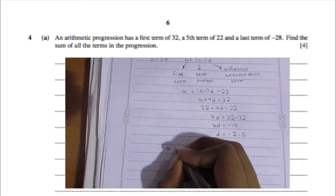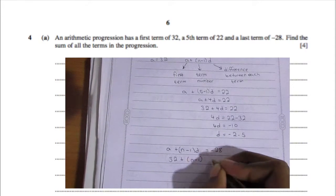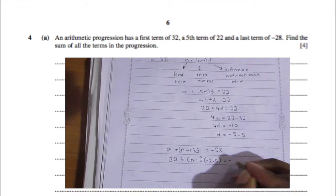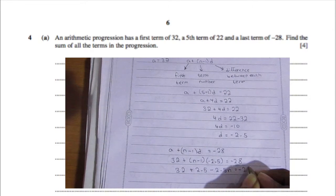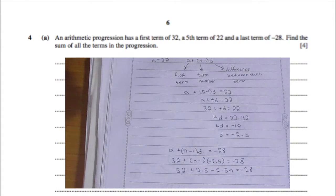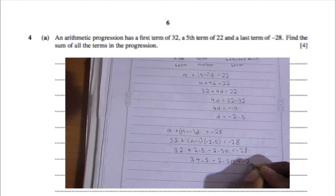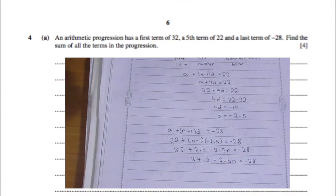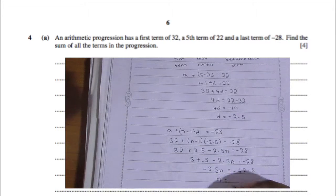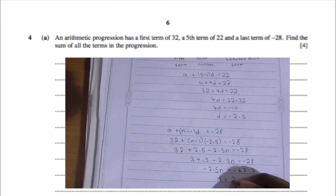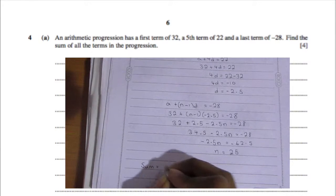Now find the number of terms. We know the last term is −28, so: 32 + (n−1)(−2.5) = −28. Expanding: 34.5 − 2.5n = −28. Solving: 2.5n = 62.5, so n = 25. There are 25 terms in this progression.